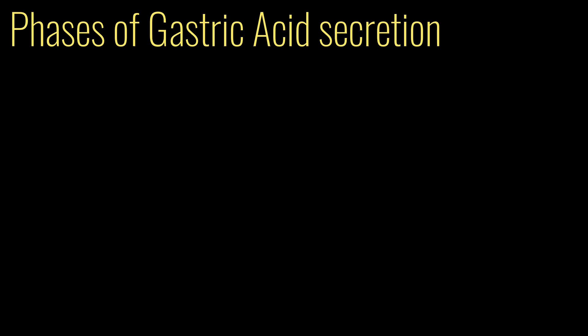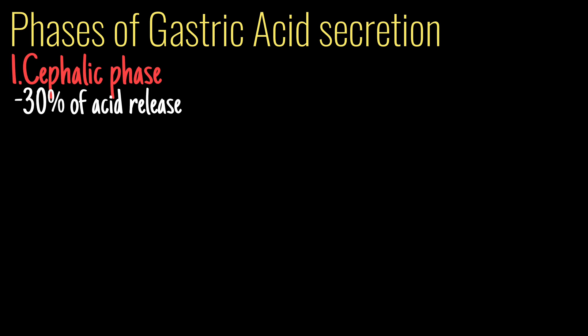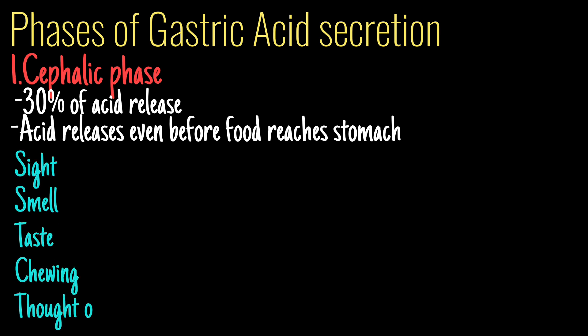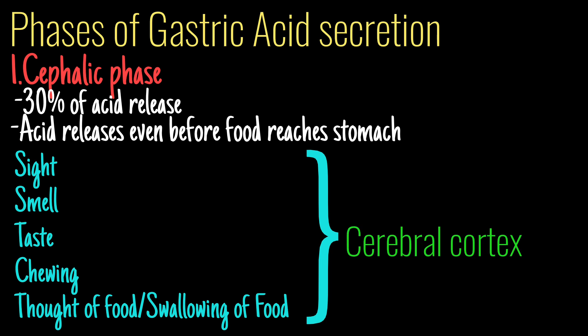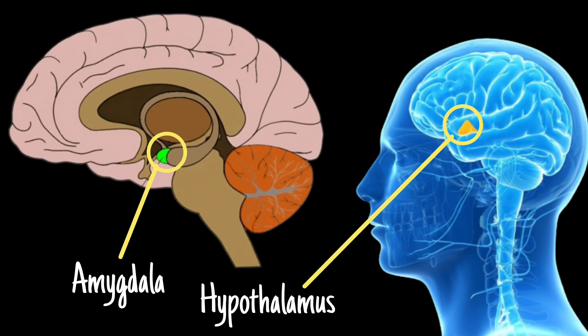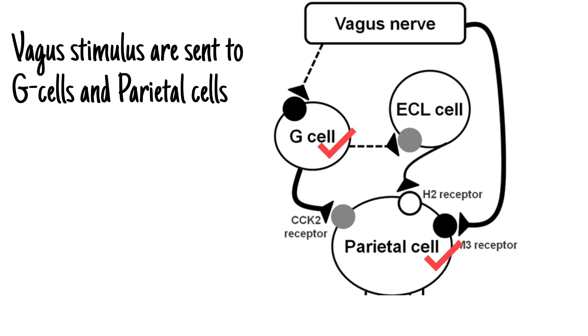The cephalic phase accounts for 30% of acid release and occurs even before food reaches the stomach. The sight, smell, taste, chewing, thought of food, or swallowing of food is perceived by the cerebral cortex or the appetite center of the amygdala and hypothalamus, and thus a vagal signal is sent to G cells and parietal cells, stimulating the release of hydrochloric acid.